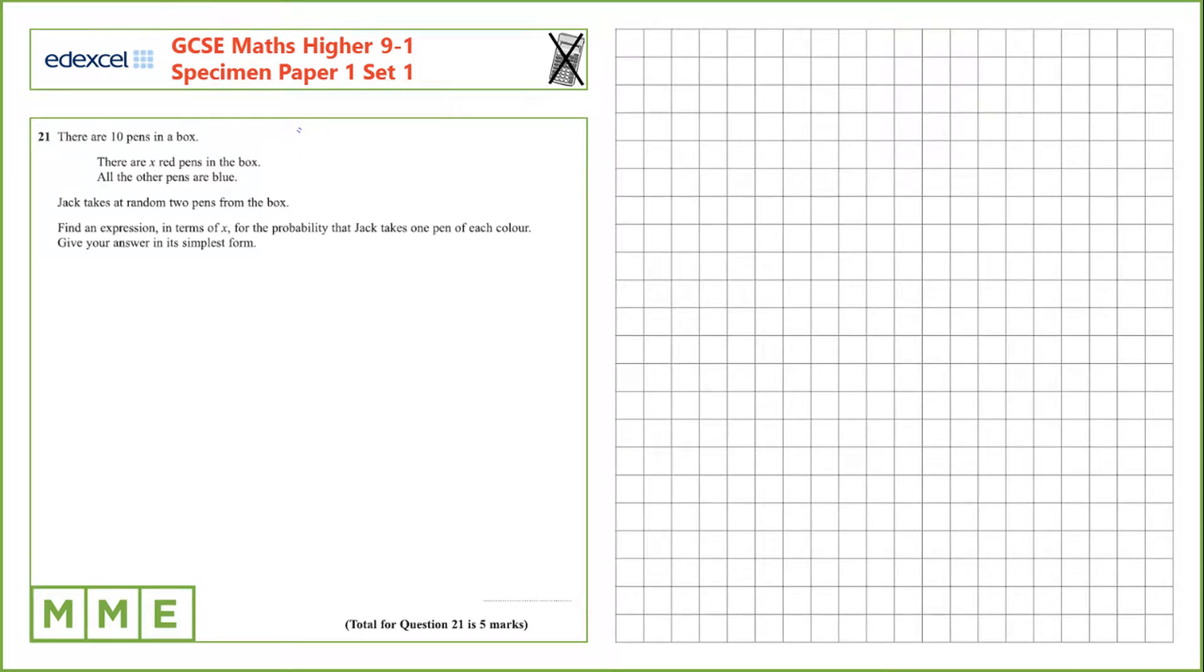Question 21. There are 10 pens in a box and we have x red pens in the box. All the other pens are blue. Jack takes at random two pens from the box. Find an expression in terms of x for the probability that Jack takes one pen of each color. Give your answer in its simplest form.